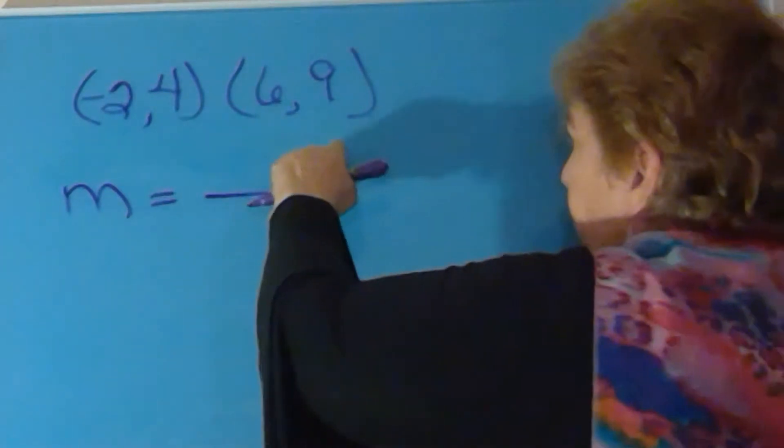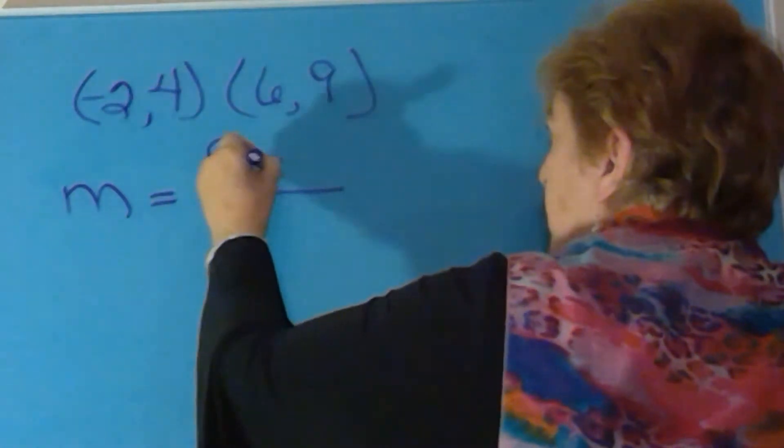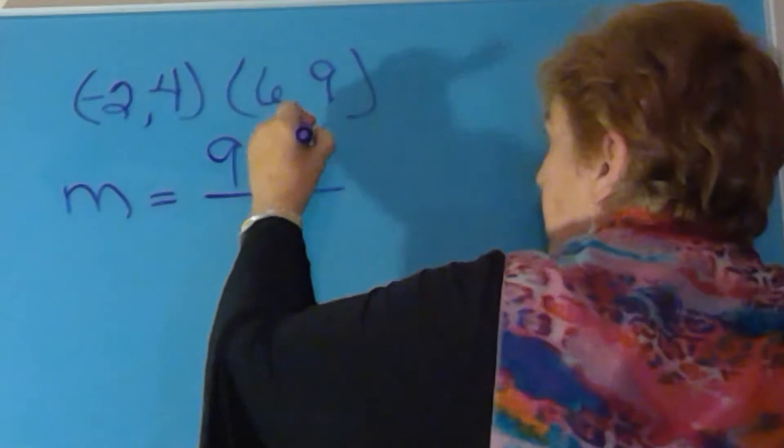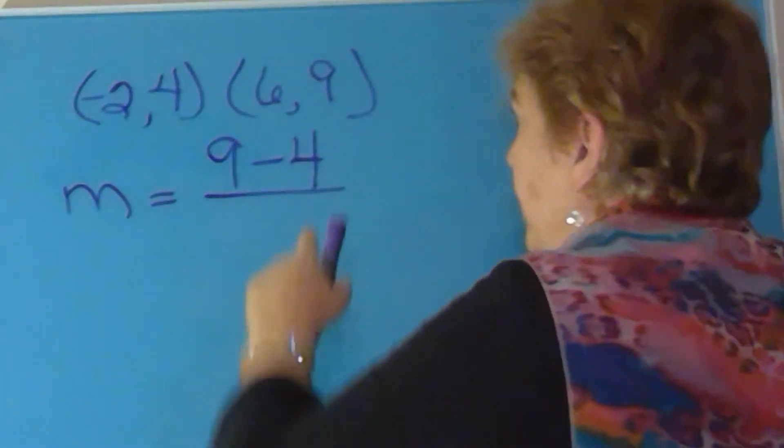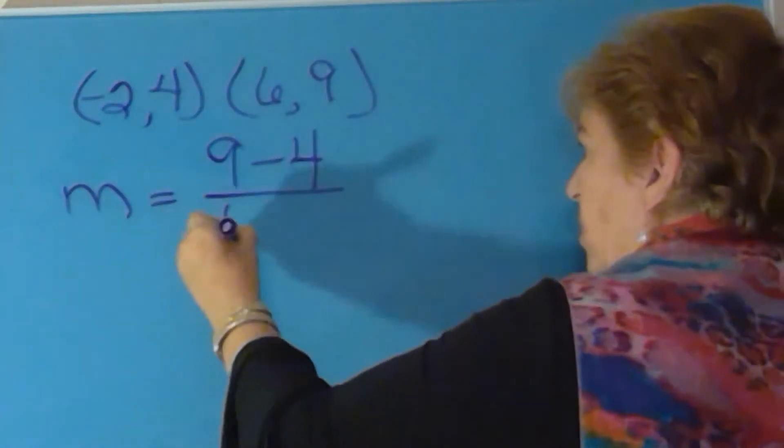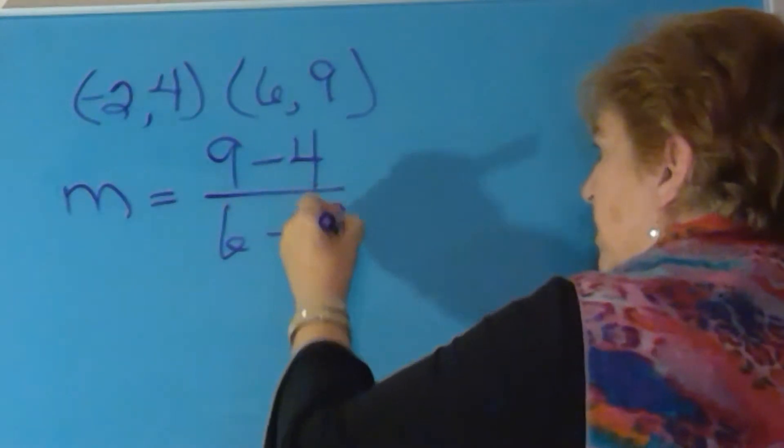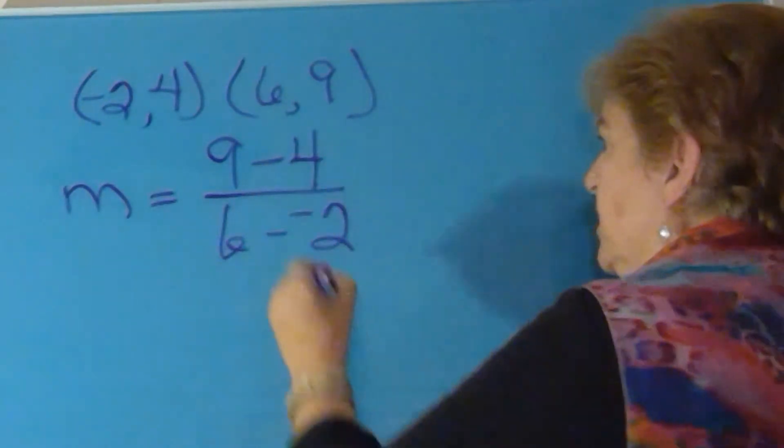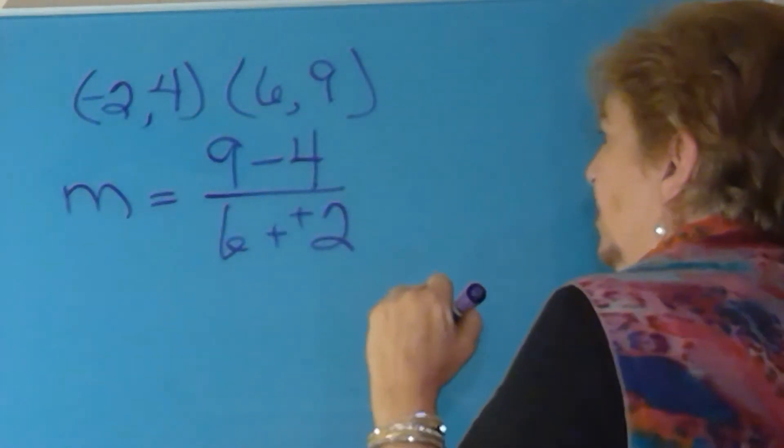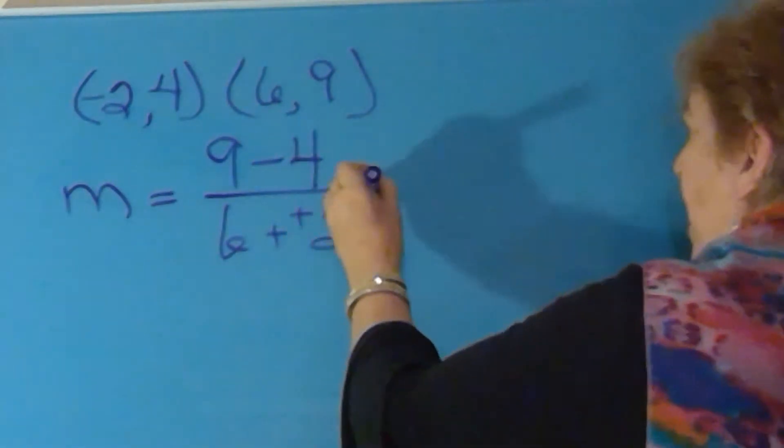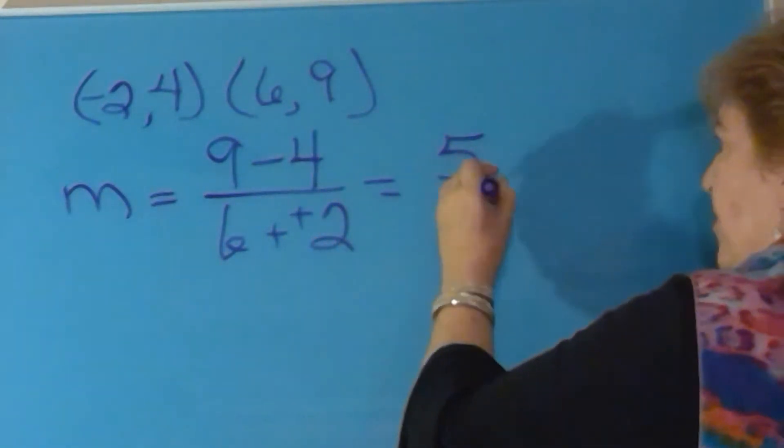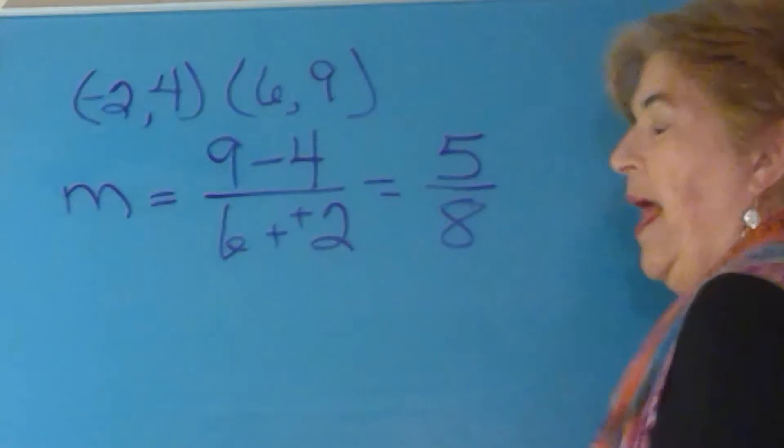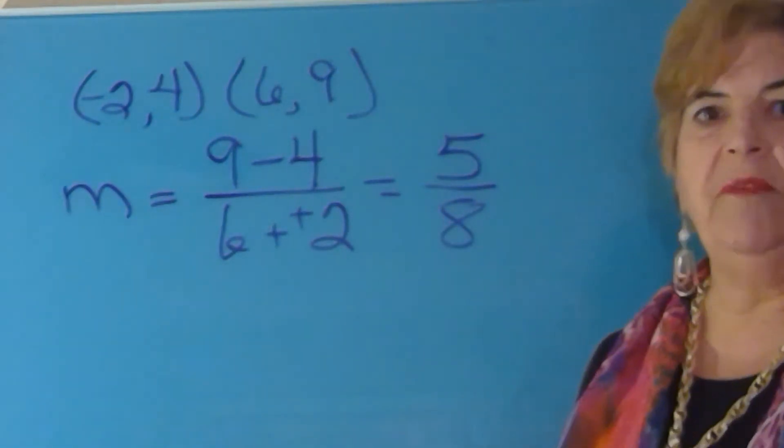When given two points to find the slope, you take the difference of the y coordinates divided by the difference of the x coordinates. And when you have six minus a negative two, that becomes a plus and you end up with five eighths. And that is the slope of the line.